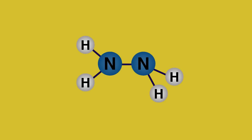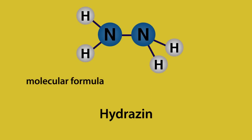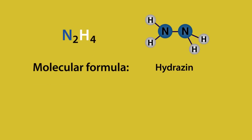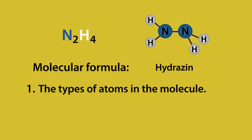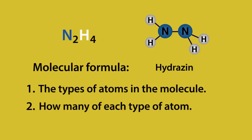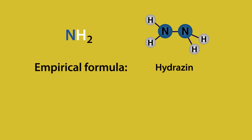Consider the compound hydrazine. Its molecular formula is N2H4, but its empirical formula is NH2. The molecular formula of a compound tells us two things: one, the types of atom in the molecule — in this case nitrogen and hydrogen — and two, how many of each type of atom. In this case, there are two nitrogen atoms and four hydrogen atoms.